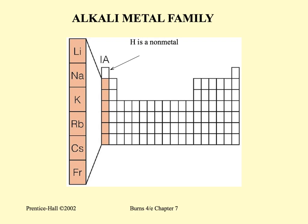The first one is called 1A and it is called the alkali metal family, excepting for the hydrogen. You know that hydrogen is placed here but it is not a metal. So all of the others are alkali metals: lithium, sodium, potassium, rubidium, cesium and francium.